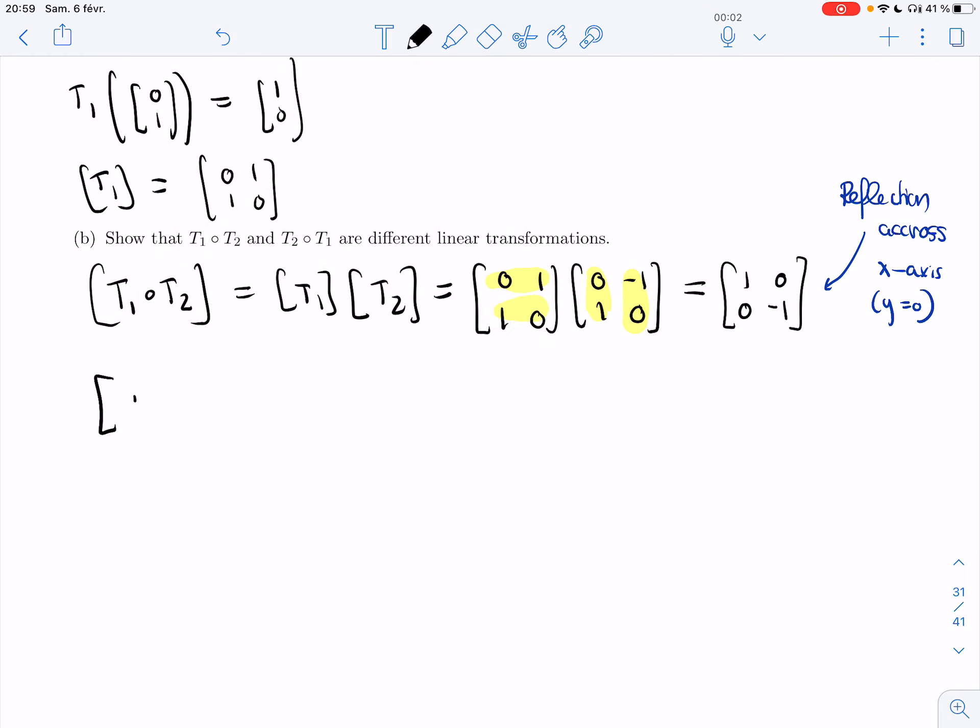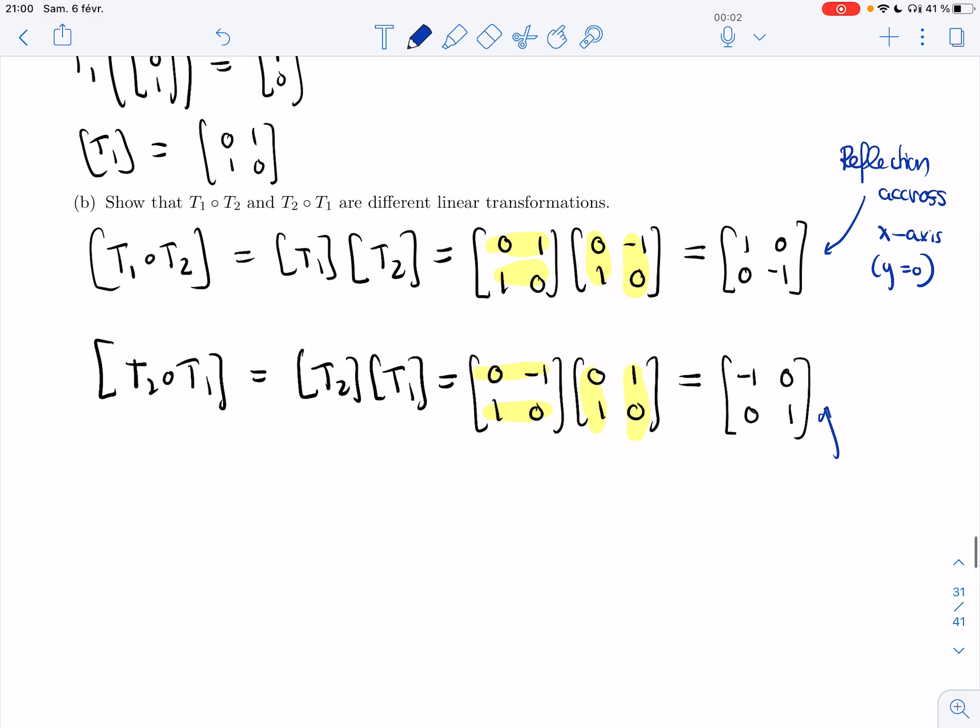What happens if I take T2 and compose it with T1? That would be T2 composed with T1, so [0, -1; 1, 0] times [0, 1; 1, 0]. I get minus 1, 0, 0, and 1.